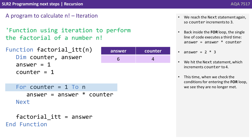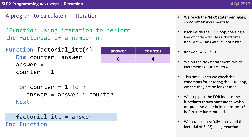This time when we check the conditions for entering the for loop, we see they're no longer met. We skip past the for loop to the function's return statement, which outputs the value held in answer — which is 6 — before the function ends. We successfully calculated the factorial of 3 using an iterative approach, in this case a for loop.